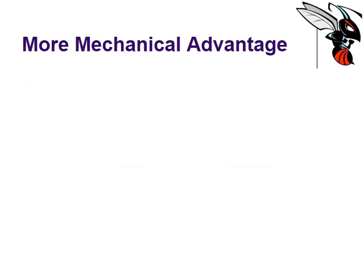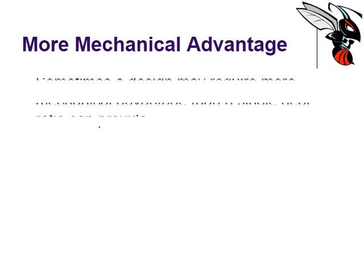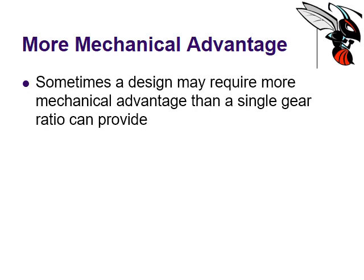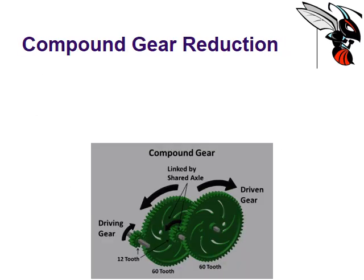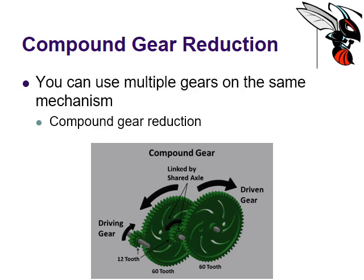But what about more mechanical advantage? Let's say we need more than what we're getting in a typical gear setup. Here is where compound gears come into play. Sometimes a design may require more mechanical advantage than a single gear ratio can provide — a VEX robot design might require a 12 to 500 gear ratio, but we don't have a 500 tooth gear available. So we can build a compound gear reduction. Here's the driving gear — it's a 12 tooth. Here's the driven gear — it's a 60 tooth. But in the middle, on the same axle as that 60 tooth gear, we've got another 12 tooth gear. So we've got a 12 to 60 gear ratio, and then another 12 to 60.